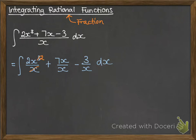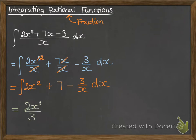Then we simplify them. And we'll get the integral is now going to be of 2x squared plus 7 minus 3 over x. And each of those pieces we know how to integrate. So we do them one at a time.